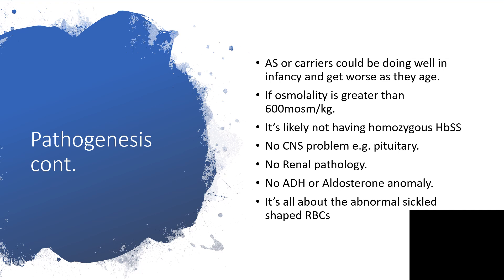If osmolarity is 600 milliosmoles per kilogram or greater, there is no central nervous problem — for example, no problem with the pituitary, no renal pathology, no antidiuretic hormone or aldosterone anomaly. It is all about the abnormal sickle shape of the red blood cells.